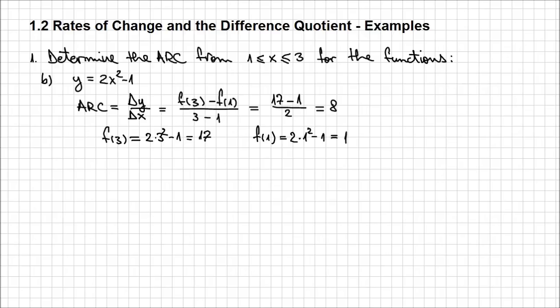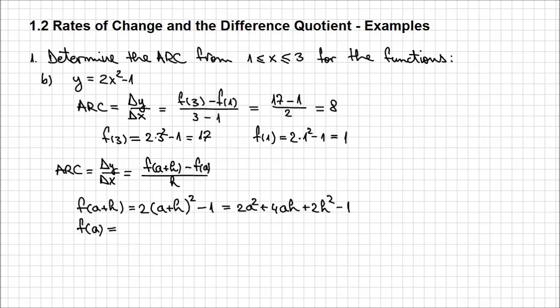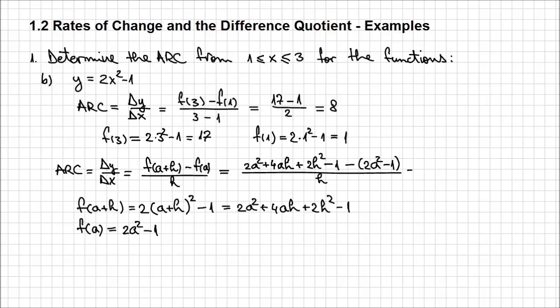But let's actually apply the difference quotient in this case. The average rate of change, or delta y over delta x, using the difference quotient, is f of a plus h minus f of a over h. What is f of a plus h? It's going to be 2 times (a plus h) squared minus 1. Expanding that square, I get 2a squared plus 4ah plus 2h squared minus 1. And f of a is 2a squared minus 1. Let's put all this together in the expression above: 2a squared plus 4ah plus 2h squared minus 1, minus (2a squared minus 1), all over h.